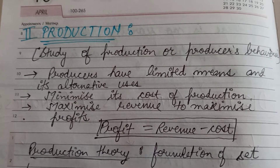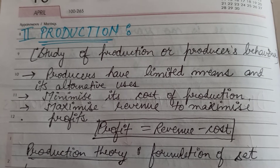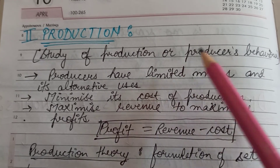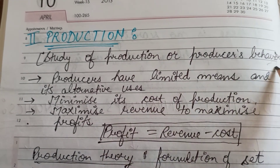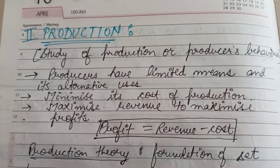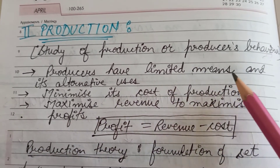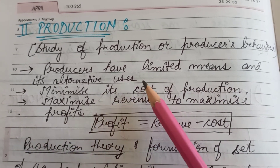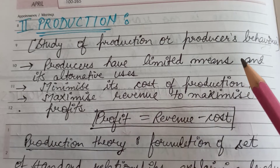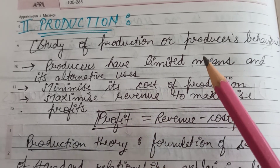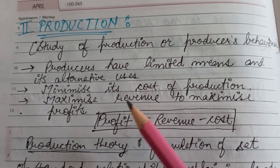Next comes the second component of economics, that is production. Production basically refers to the conversion of raw materials to finished goods. In this component we will study the producer's behavior — just as in consumption we studied consumer's behavior and how consumers respond to the allocation of resources. Producers have limited means or limited resources and they also have alternative uses; they have the choice of choosing any product over another, but how will they decide which product to choose?